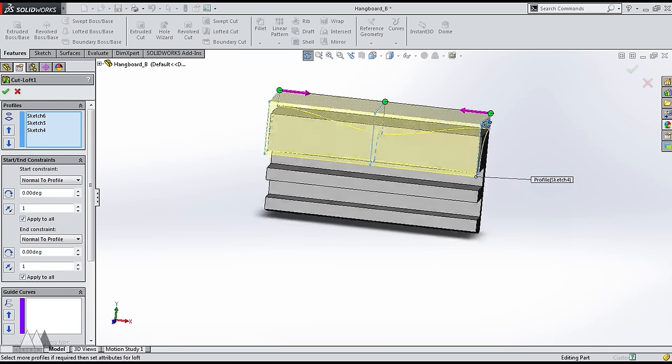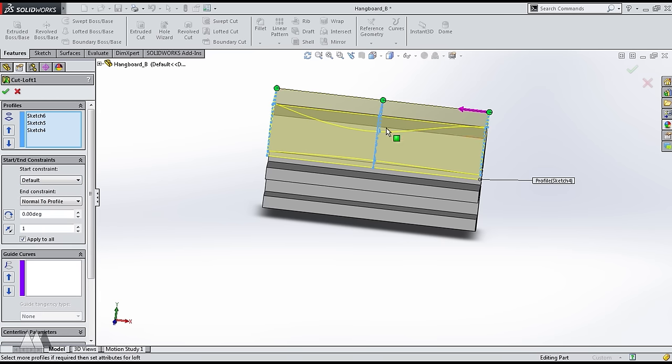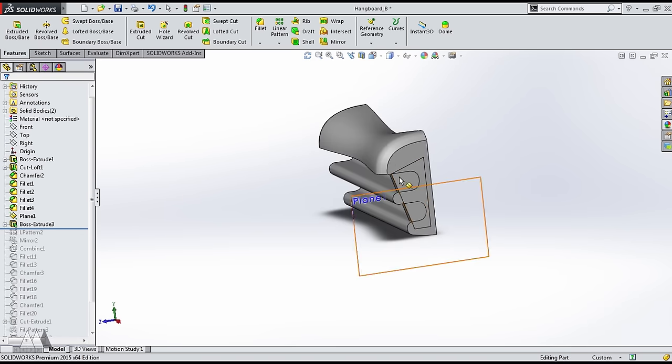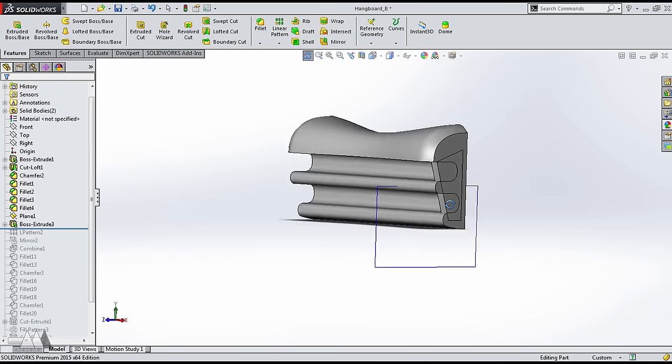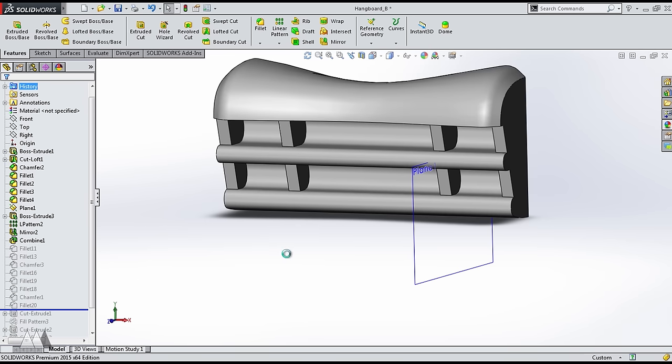Where it kind of eases into the curves, versus if you just use the default, it goes straight from one to the other, as you can see here. From there, I threw in a bunch of fillets, and I created this sidewall, which will start adding strength to the hangboard. I did a linear pattern to give myself some different slots, and I mirrored that across. Now I've got a few different sized holes that I can hang from.